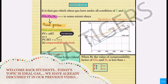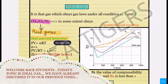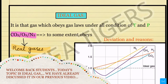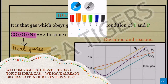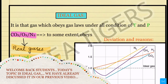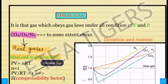As-salamu alaykum students and welcome back to ETA Tigers. Today's topic of discussion is ideal gas. We've already studied ideal gas before. We'll discuss the graph and see what is happening at low pressure, compare it with high pressure, and then see what is happening in the middle of the equation. So let's start with the ideal gas.